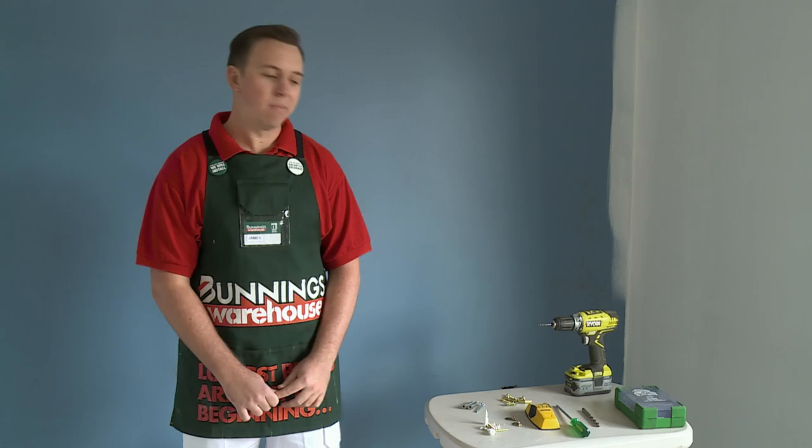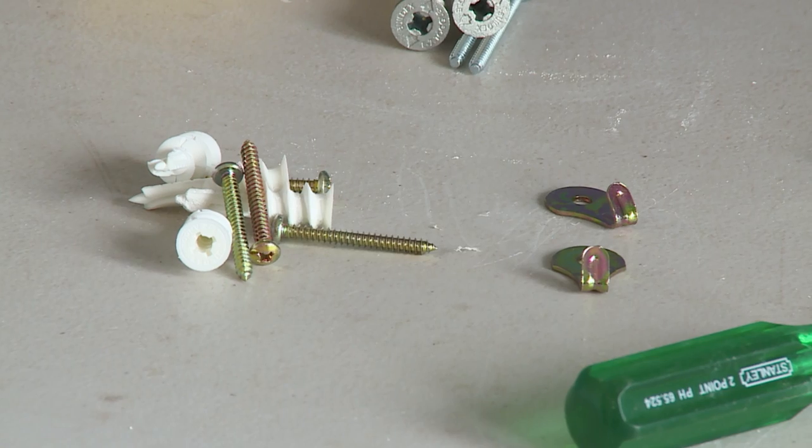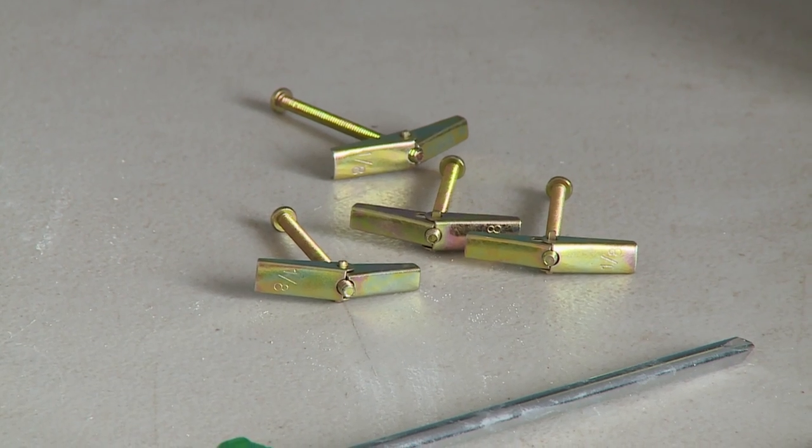Wall hooks are good for hanging pictures and add a good decorative touch and they're quite easy to install. So I have three types of hooks here. These types do not need to go into a stud. They need to go directly into the plasterboard.